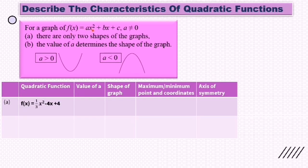For quadratic functions, there are only two shapes of graphs. The value of a determines the shape of the graph. If a > 0, meaning positive, the graph will look like a U-shape. When a < 0, meaning negative, the graph will turn upside down and look like this.